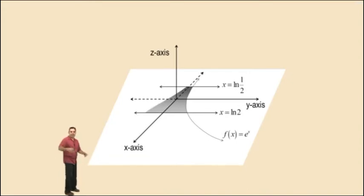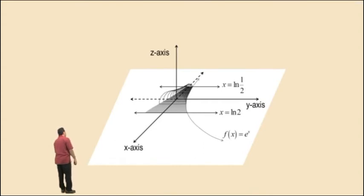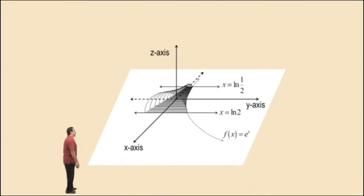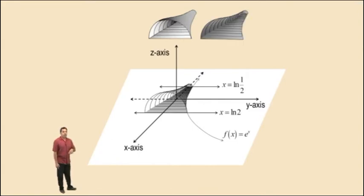We need a visual, so here it comes. Notice that the radii are all equal to f of x. Here's a picture of an individual piece of our manifold.